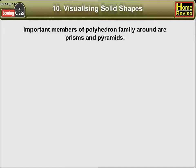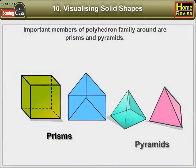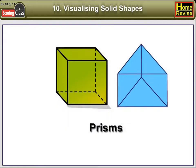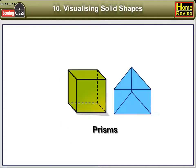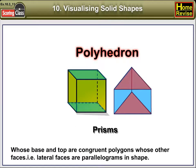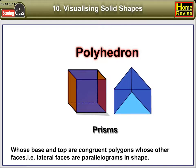Important members of the polyhedron family are prisms and pyramids. These are prisms. These are pyramids. A prism is a polyhedron whose base and top are congruent polygons, and whose other faces — i.e., lateral faces — are parallelograms in a chain.